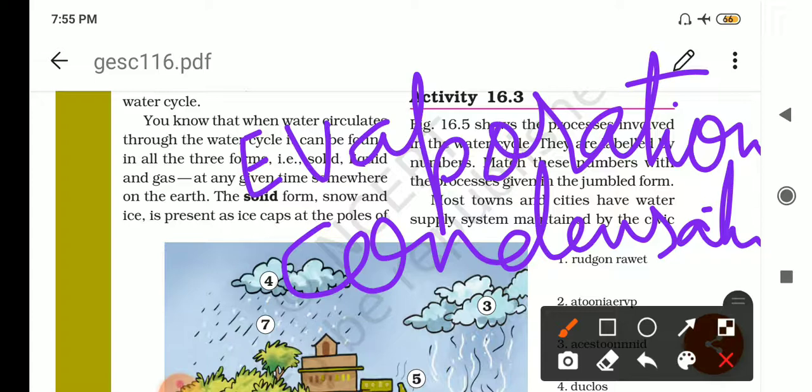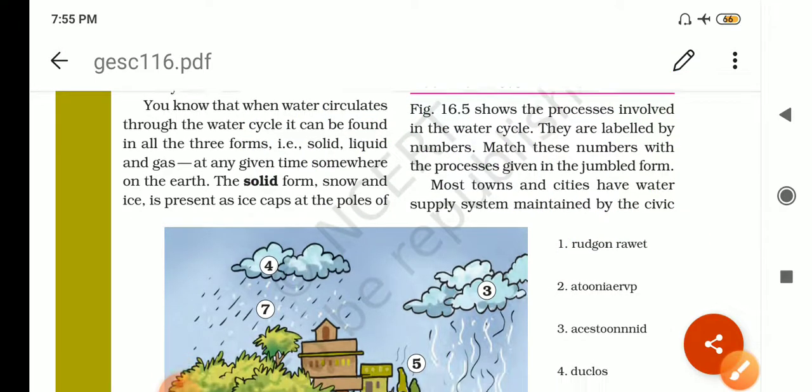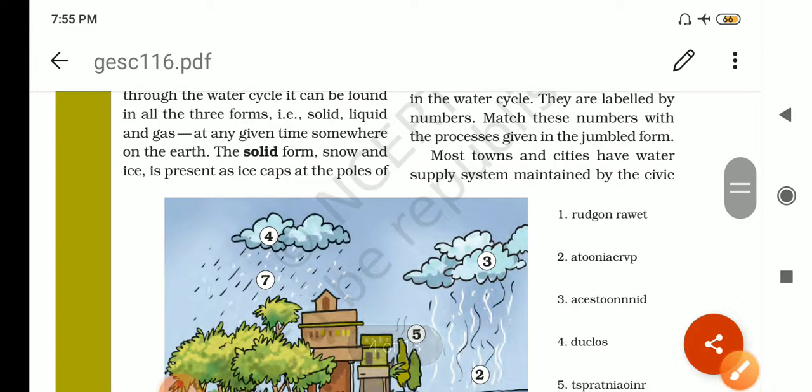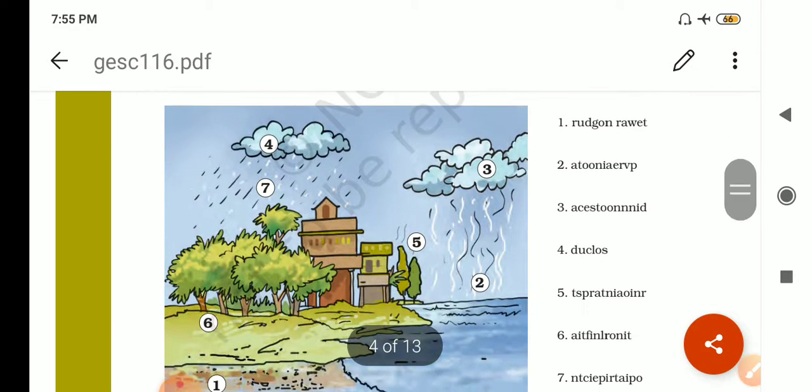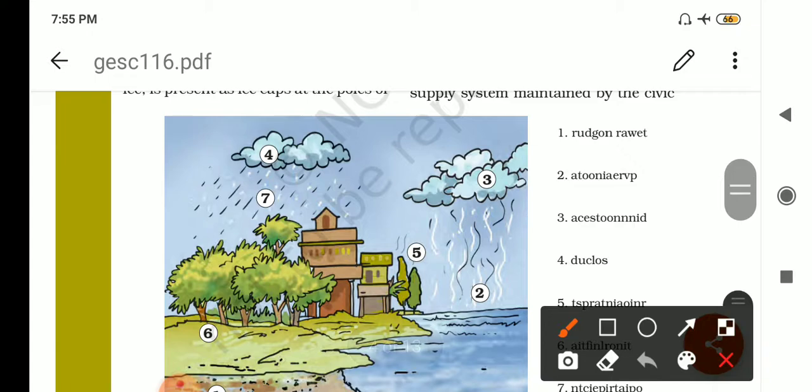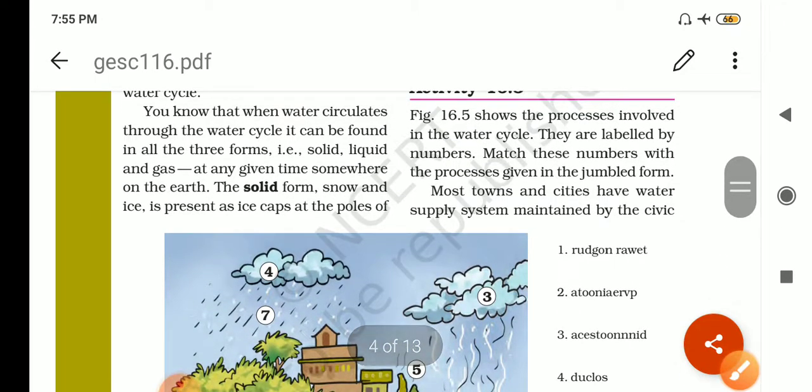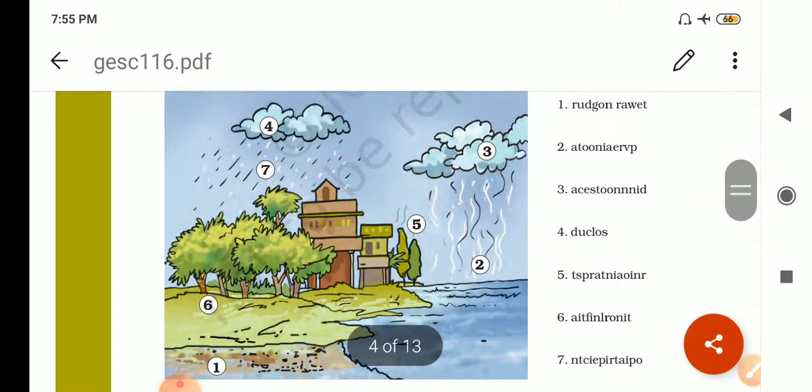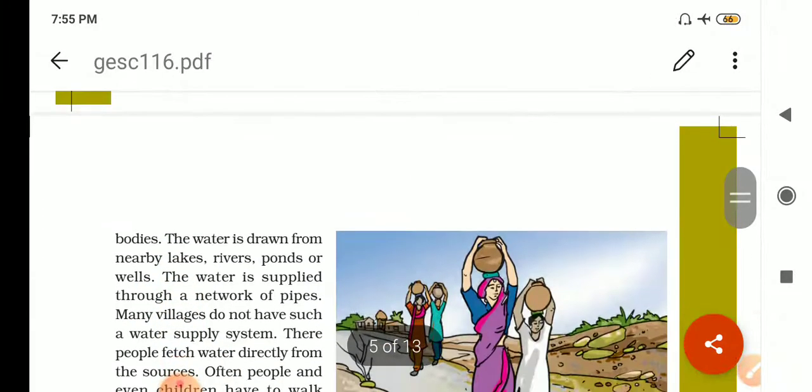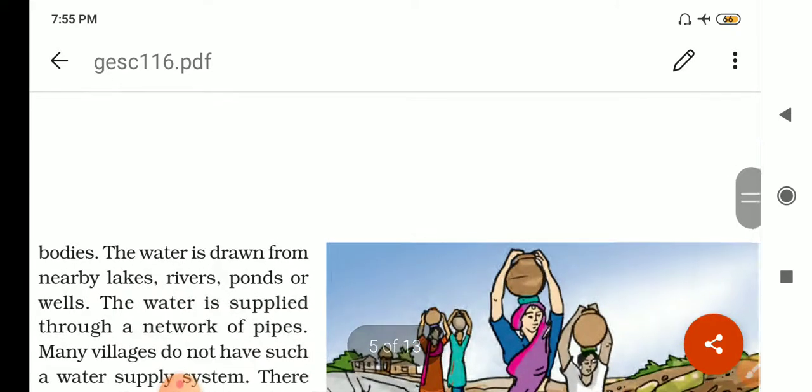Now next, most towns and cities have water supply systems maintained by the civic body. Civic body means municipal corporation, nagar palika, nagar parishad.